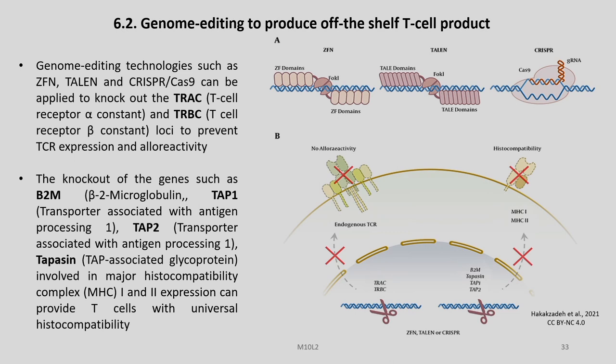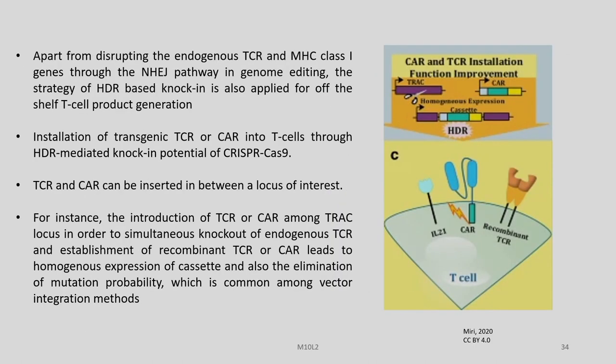The knockout of genes such as B2M (beta-2 microglobulin), TAP1 (transporter associated with antigen processing 1), TAP2, and genes associated with glycoproteins involved in MHC class 1 and 2 expression can provide T-cells with universal histocompatibility.